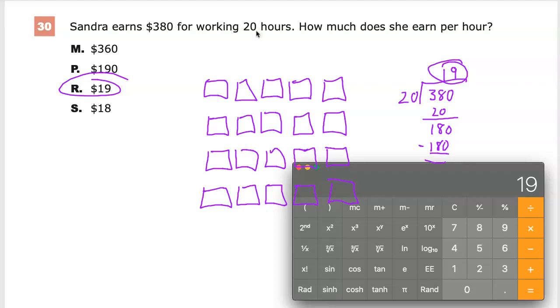Sandra works 20 hours and she made a total of $380. And you need to separate it out to figure out, because it says per hour here. Per in this case, meaning like for each.